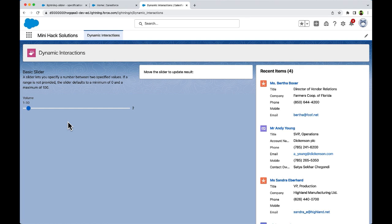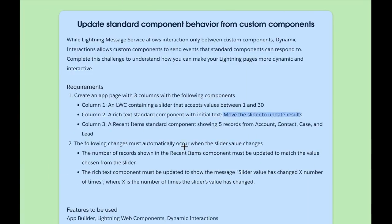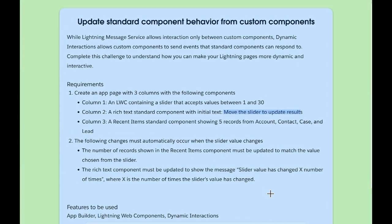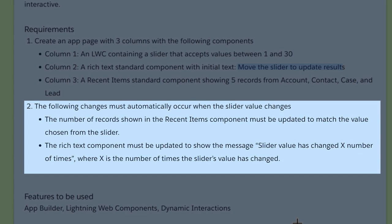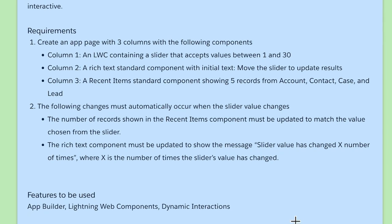Let us now check the rest of the requirements. The following changes must automatically occur when the slider value changes: the number of records shown in the recent items component must be updated to match the value chosen from the slider. The rich text component must be updated to show the message: Slider value has changed x number of times, where x is the number of times the slider value was changed.